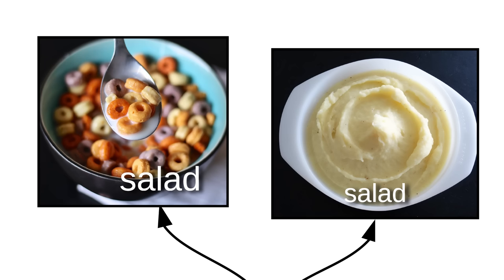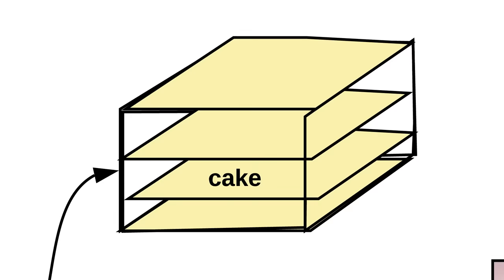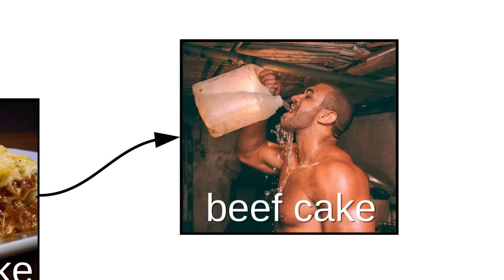There are exceptions, like the salads. These are salads, and steak is a salad. Then there's the cakes. Lasagna's a beefcake, and so is this guy. Total beefcake.